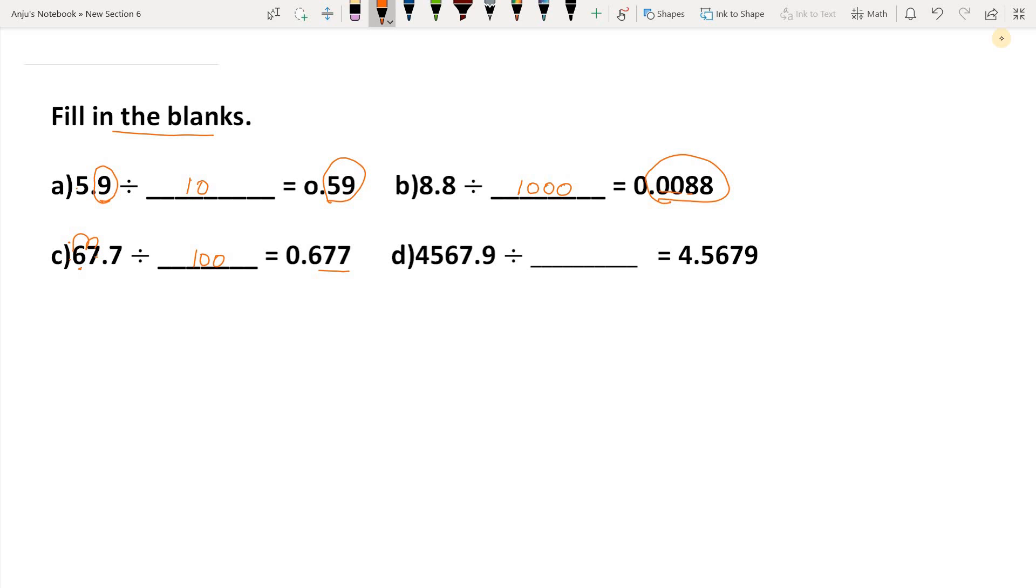One more: 4567.9 divided by what gives 4.5679? Students, here the decimal point was between 7 and 9, but now the decimal point has come after the 5. That means it moved one, two, three places. Now it's between 4 and 5, meaning right to left three places moved. This means it is divided by 1000.